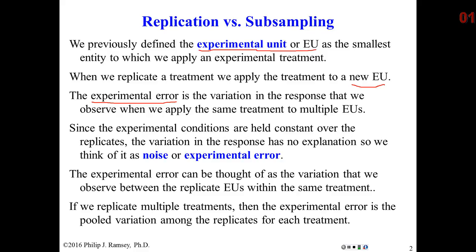Because we've held the experimental units or treatment conditions constant over the replicates, the variation in the responses for those replicate experimental units is noise — we can't explain it. We didn't change the experimental factors, but we're still seeing variation in the response. Many people today call it noise, but Fisher coined the term experimental error. Experimental error is often thought of as the variation between replicate experimental units.